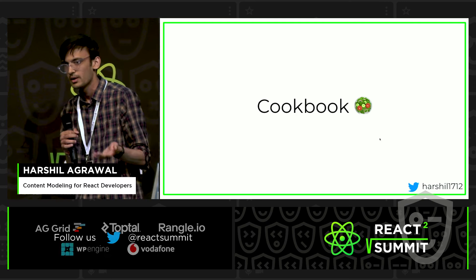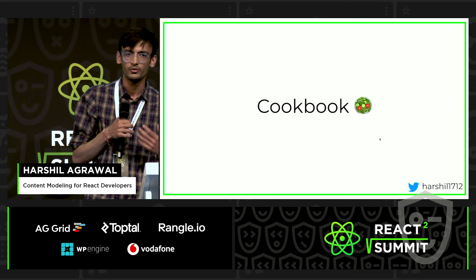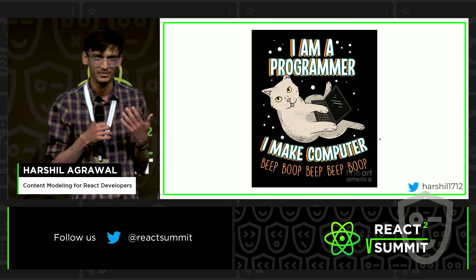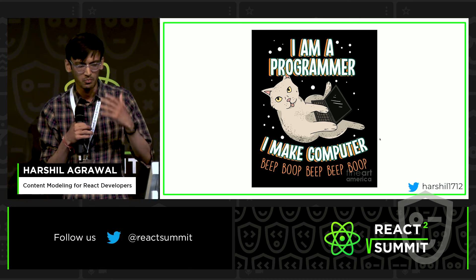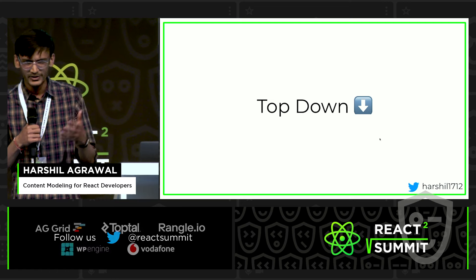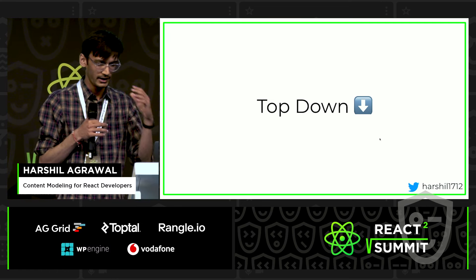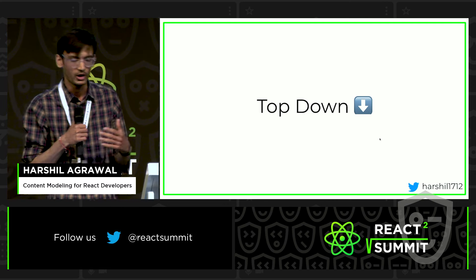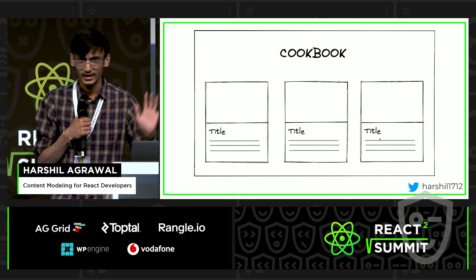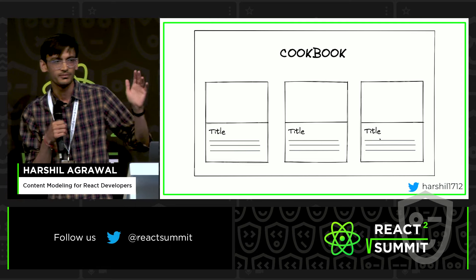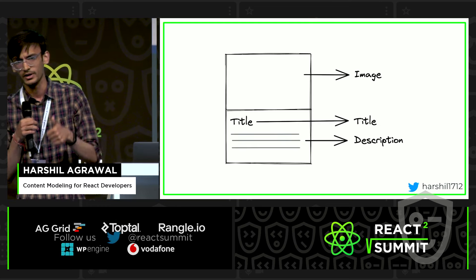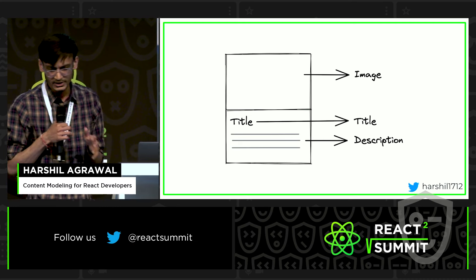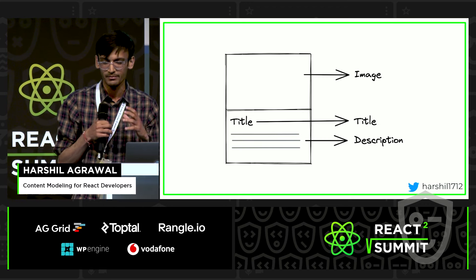That's quite enough of theory — let's get into action. I want to talk today about a Cookbook app, because I have taken cooking as a hobby recently, and I'm trying to create a web app. In the next few slides, I'm going to talk about my approach to modeling content for this application. I've taken a top-down approach so I can break down the elements into smaller pieces, which helps me reiterate my content model over and over again. I started out with wireframing — I'm terrible at design, but this is what I envision my web app to be.